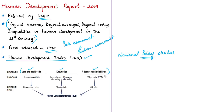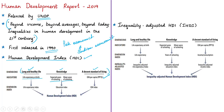The health dimension is assessed by life expectancy at birth. The education dimension is measured by the mean years of schooling for adults aged 25 years and above, and expected years of schooling for children of school-entering age. The standard of living dimension is measured by Gross National Income per capita.